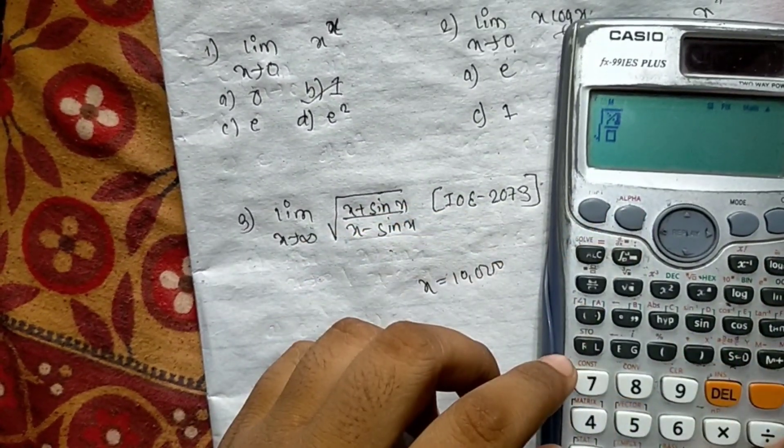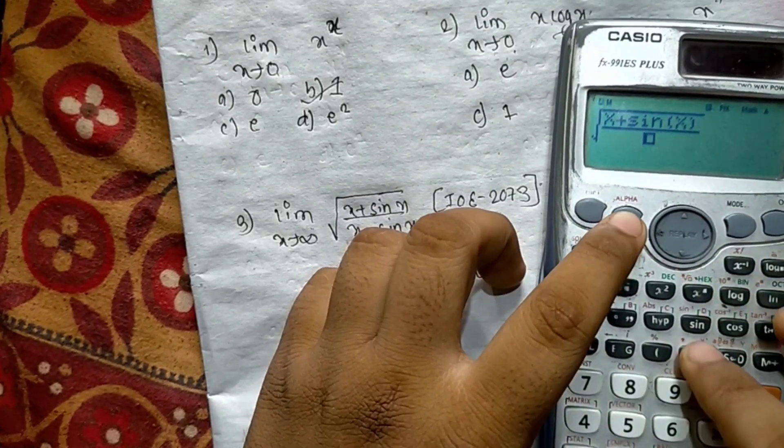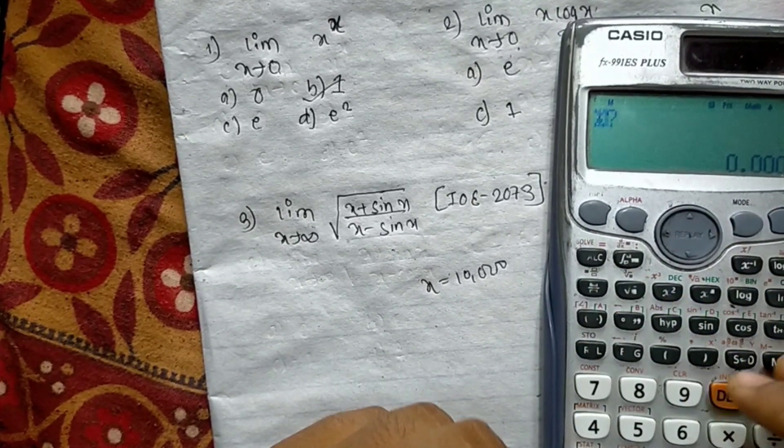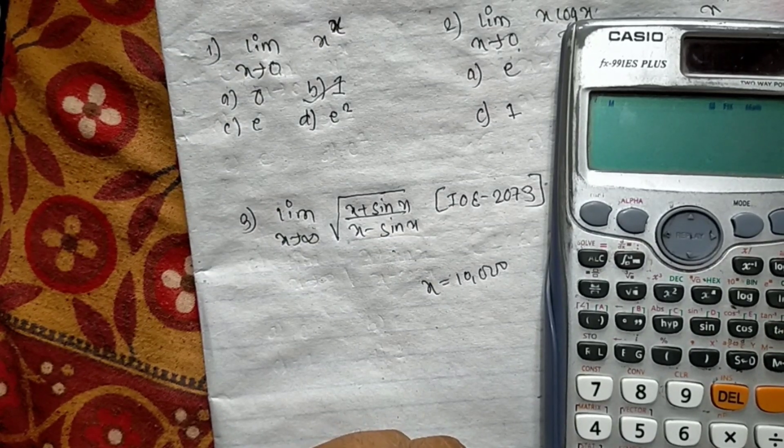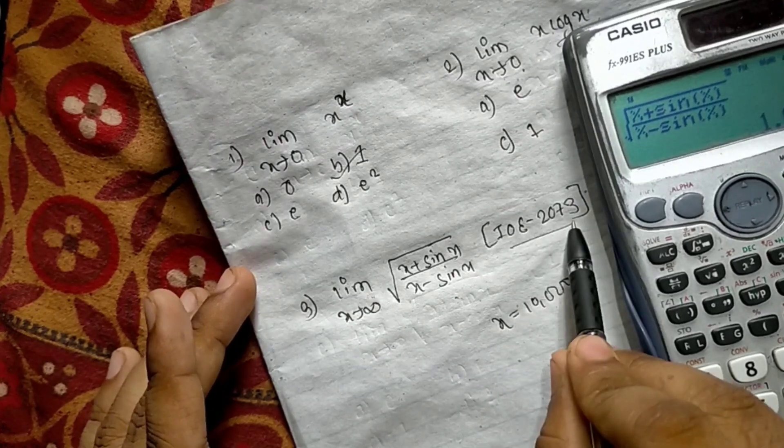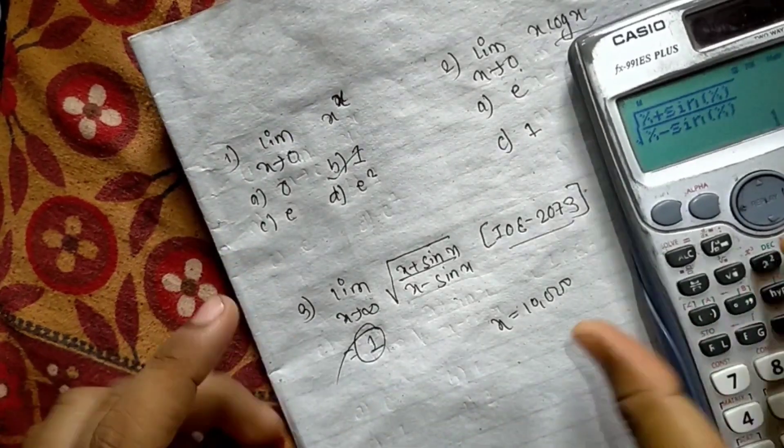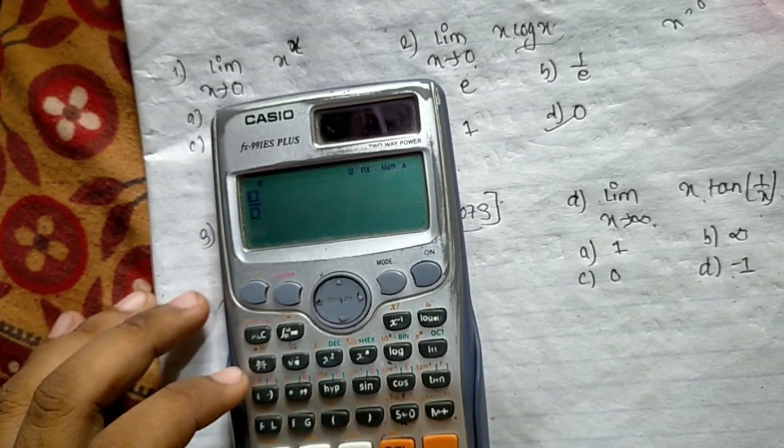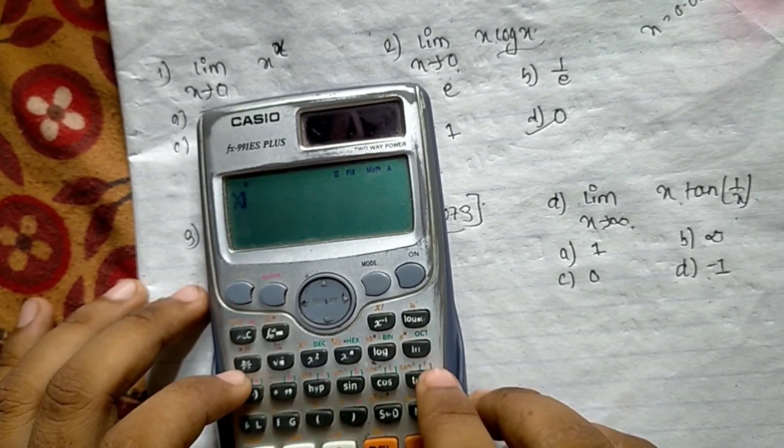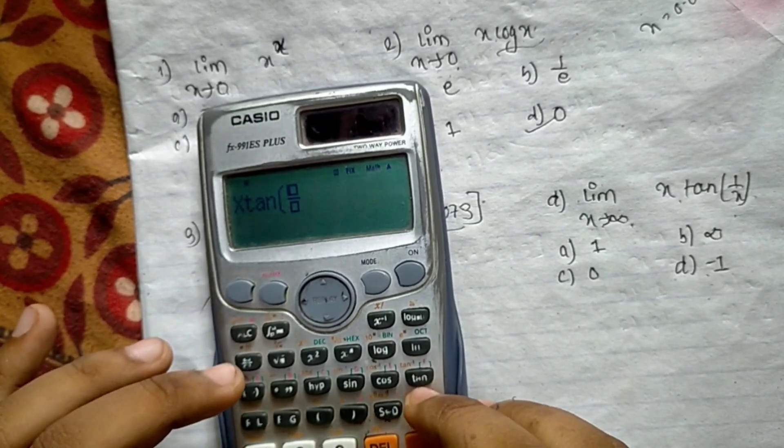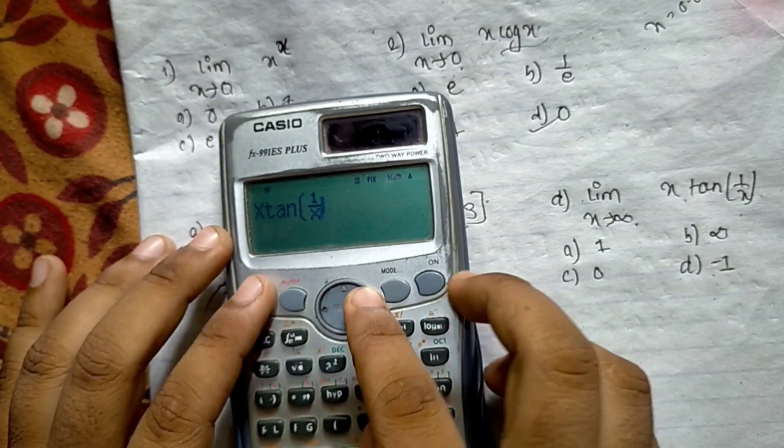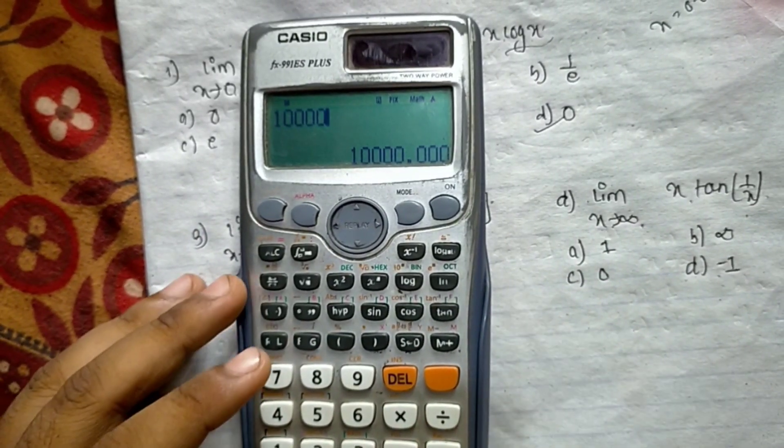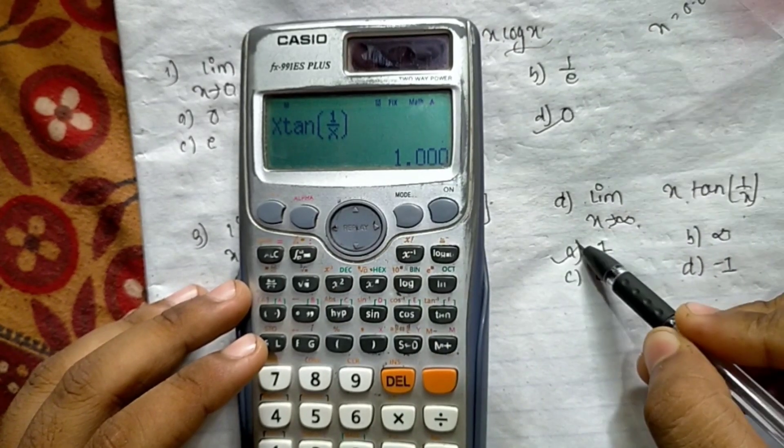Next question: root of x plus sin x divided by x minus sin x. Now 10,000, put the value in the question. Fourth question: limit x tends to infinity, open bracket 1 plus 1 by x, close bracket, to the power x. Put 10,000 for x, answer is 1.